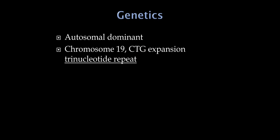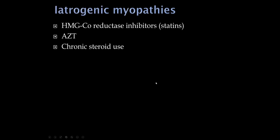Myotonic dystrophy is a trinucleotide repeat disorder — specifically a CTG repeat on chromosome 19. Three common trinucleotide repeat disorders for boards are: myotonic dystrophy (CTG, chromosome 19), Huntington's disease, and Friedreich's ataxia.